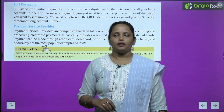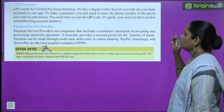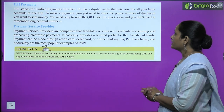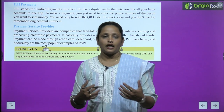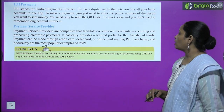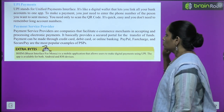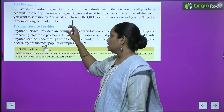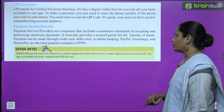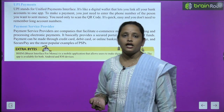UPI stands for Unified Payment Interface. It is like a digital wallet that lets you link all your bank accounts in one app. To make a payment, you just need to enter the phone number of the person you want to send money to, or simply scan their QR code. It is very quick and easy, and you do not need to remember long account numbers.